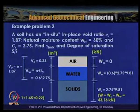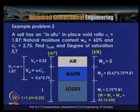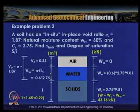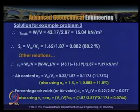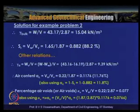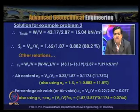Now we have all parameters defined. The bulk unit weight is obtained using the definition: γ_bulk = (Ws + Ww) / V_total = 43.17 / 2.87 = 15.04 kN/m³. The dry unit weight is weight of solids divided by total volume, and the unit weight of solids is weight of solids divided by volume of solids, which equals 1 in this problem.